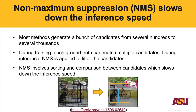The second improvement is avoiding non-maximal suppression. Most methods generate hundreds to thousands of candidates, whether two-stage, one-stage, anchor-based, or center-based. During training, each ground truth can match multiple candidates, producing multiple positive samples. During inference, non-maximal suppression is applied to filter candidates and select the best prediction. Non-maximal suppression involves sorting and comparison between candidates, which is a linear operation that slows down inference speed.